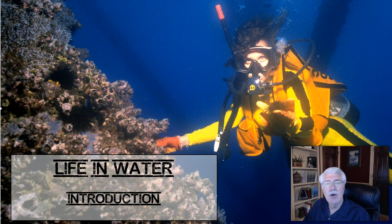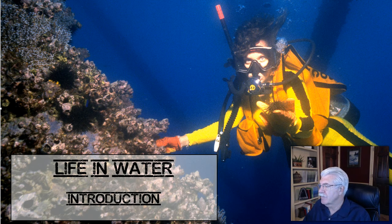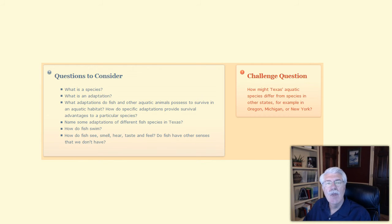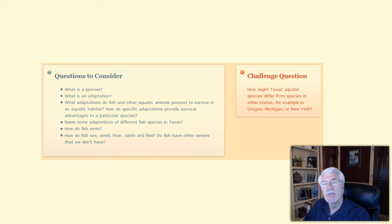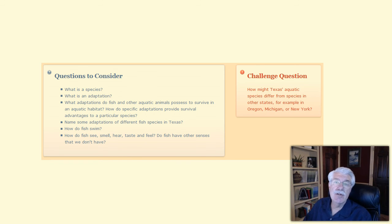Today's lesson is on life in the water. To help focus today's lesson, here are a few questions to consider. What is a species? What is an adaptation? What adaptations do fish and other aquatic animals possess to survive in an aquatic habitat? How do specific adaptations provide survival advantages to a particular species? Name some of the adaptations of different fish species in Texas.